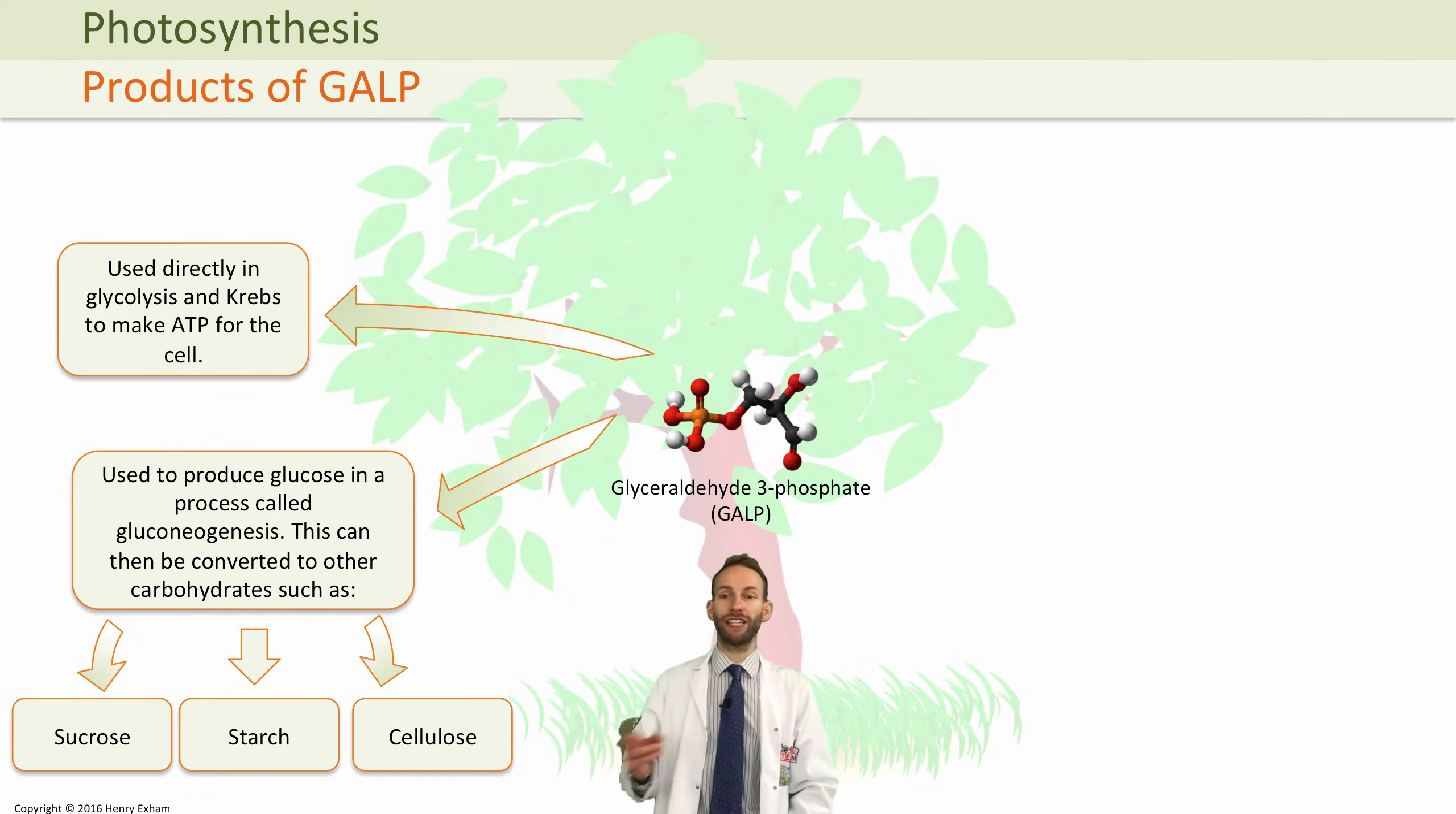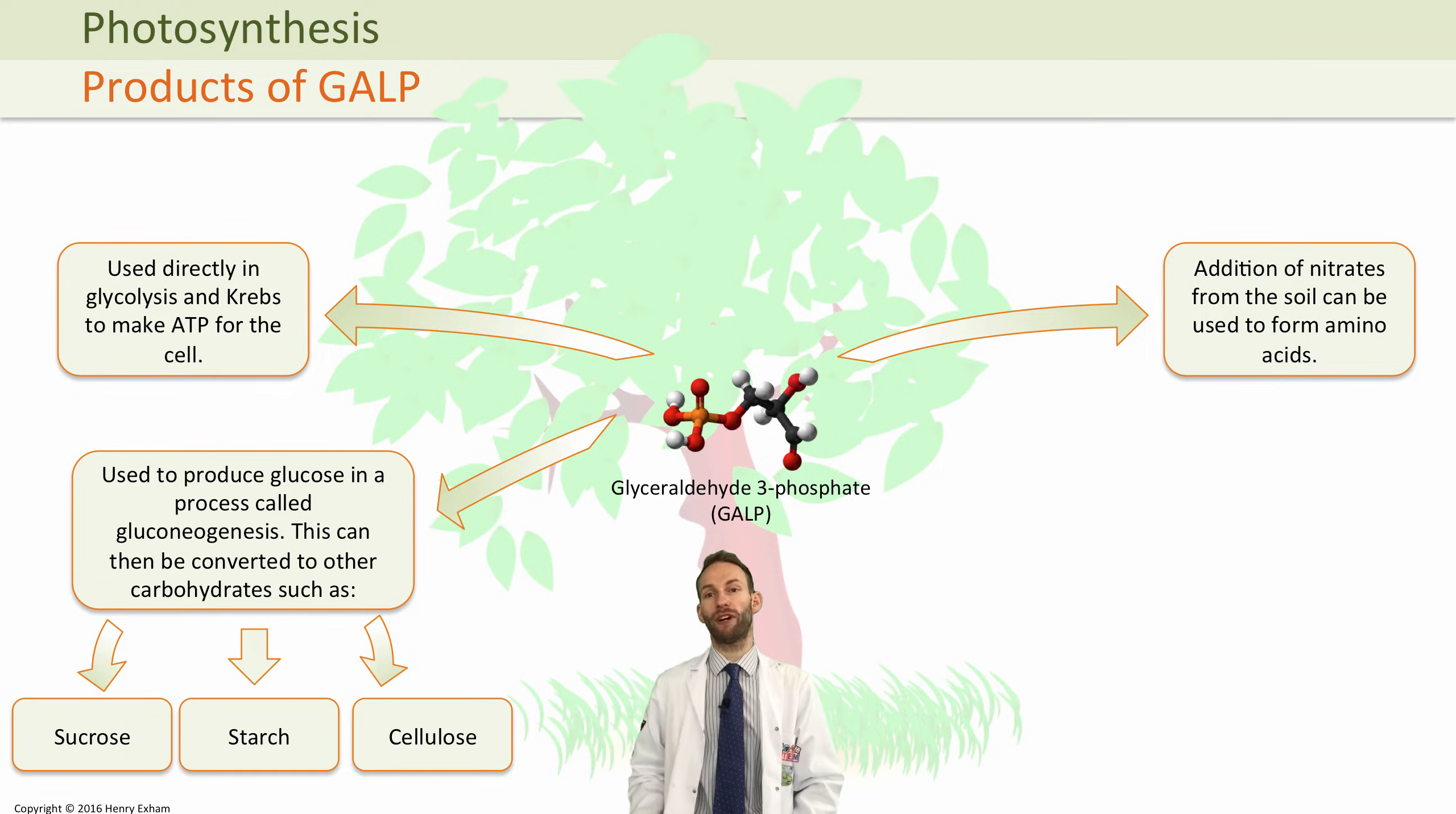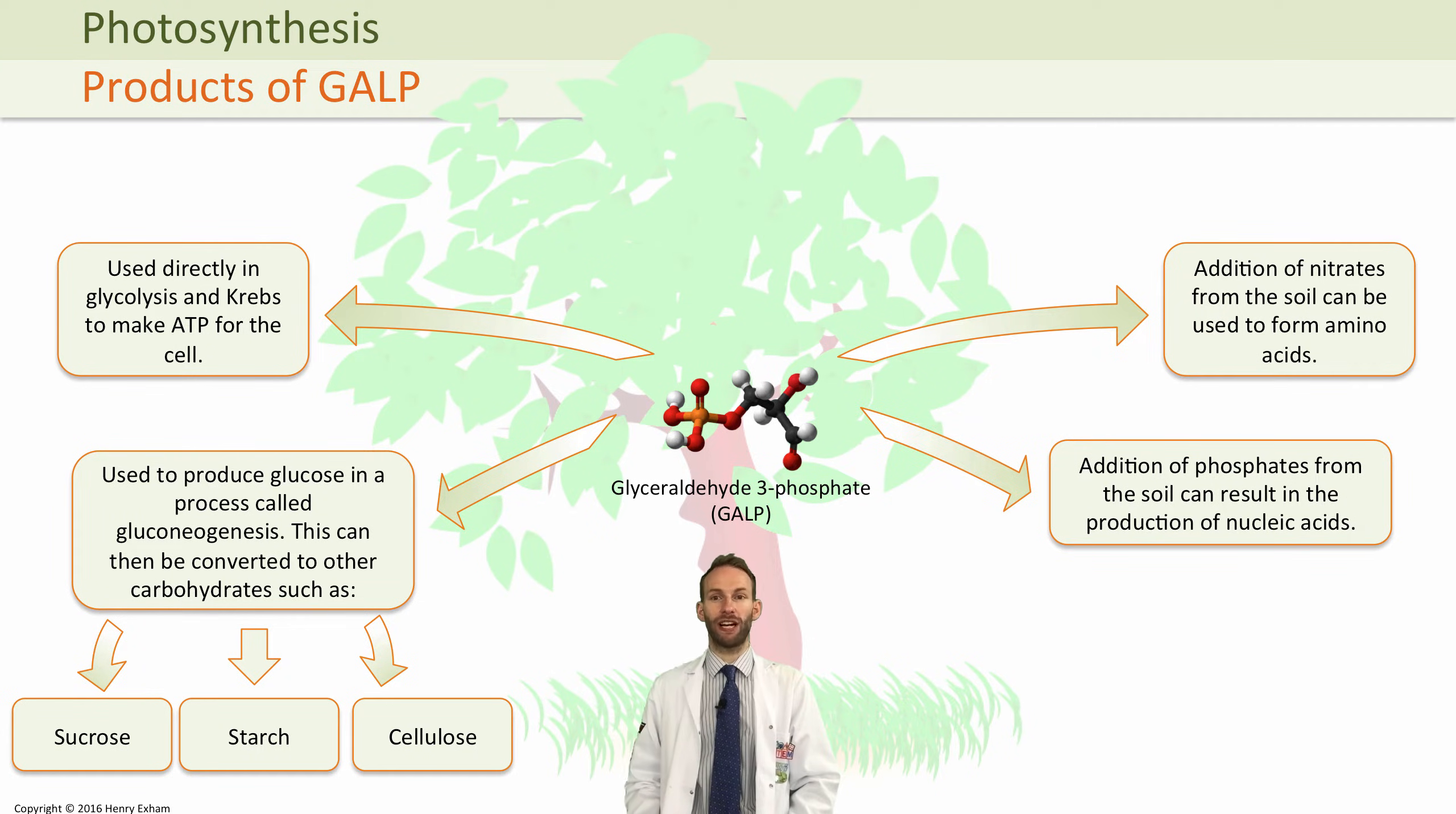You could add nitrates from the soil, and the GALP could become parts of amino acids. You could add phosphates, which the plant would get from the soil, to make nucleic acids. Some GALP that goes into glycolysis and is converted to acetyl coenzyme A can be used to make fatty acids.